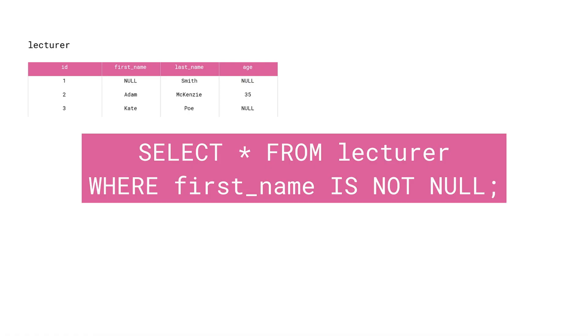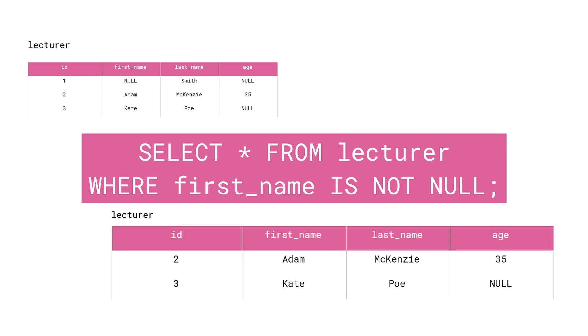In a similar way, we now want to only show Lecturers with a non-null first name, so we use: SELECT * FROM Lecturer WHERE first_name IS NOT NULL. If we run the query, we can see that the Lecturer with ID 1 and last name Smith is not shown, as this person has a Null in the first name column.